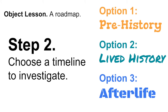Step two: choose one of three timelines to investigate. Each object has four different stages in its life cycle, but for this project I'm giving you three to focus on. Option one is the prehistory, which could include mineral mining and manufacturing. Option two is the lived history — the history of this object while it was your object. Option three asks you to look at the afterlife: what happens to your object after it is no longer yours?